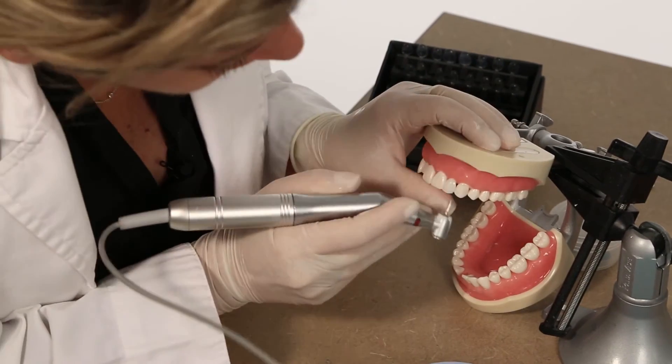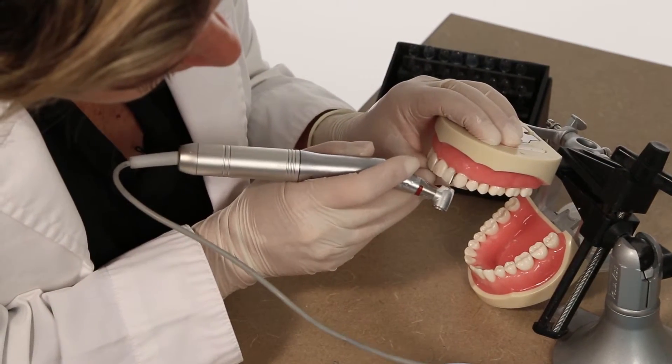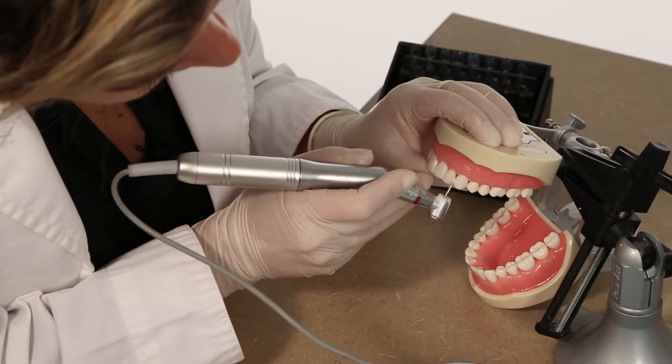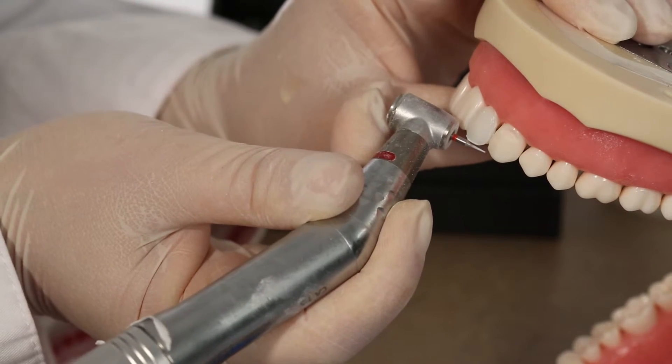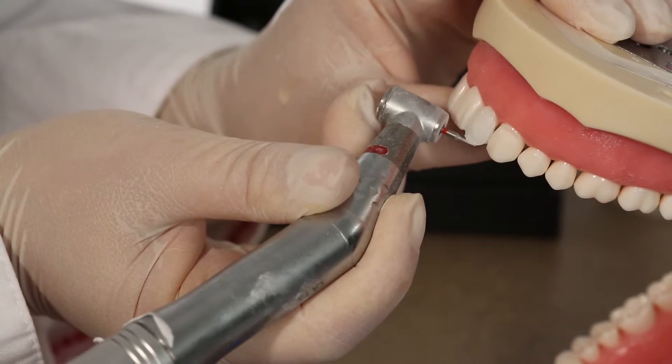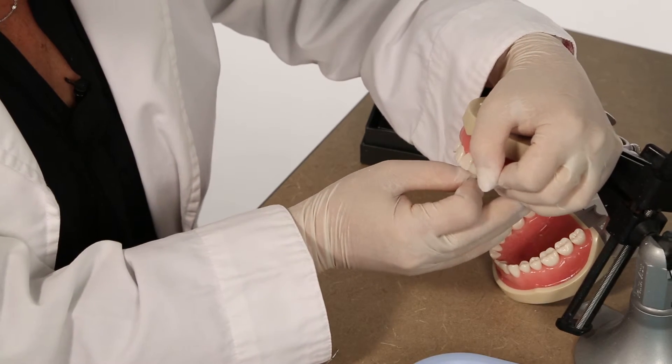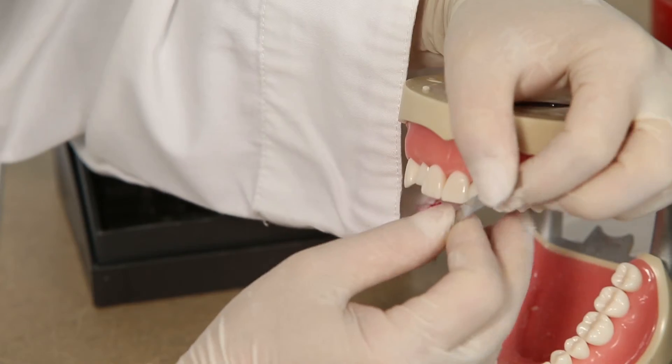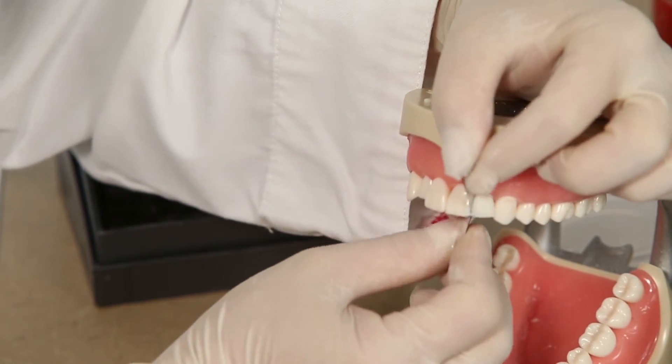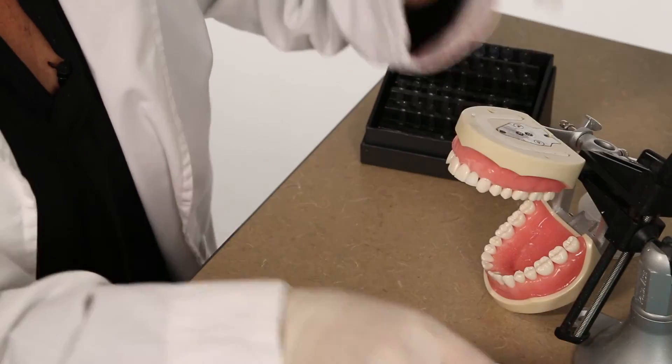In the final step, remove excess composite from the periphery with an extra fine finishing burr, taking care not to touch the glossy finish of the veneer. Finishing the veneer can be achieved with an interproximal saw followed by interproximal polishing strips to allow for clean contact points.